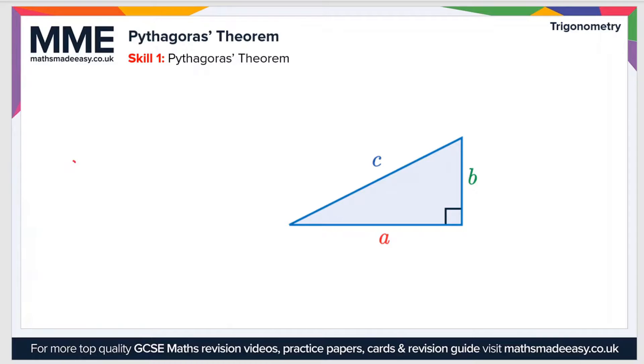Pythagoras' Theorem states that the square of the hypotenuse, c squared, where c is the hypotenuse, that's the longest side in a right-angled triangle, is equal to the sum of the squares of the opposite two sides. The opposite two sides are a and b, so the sum of their squares is a squared plus b squared.